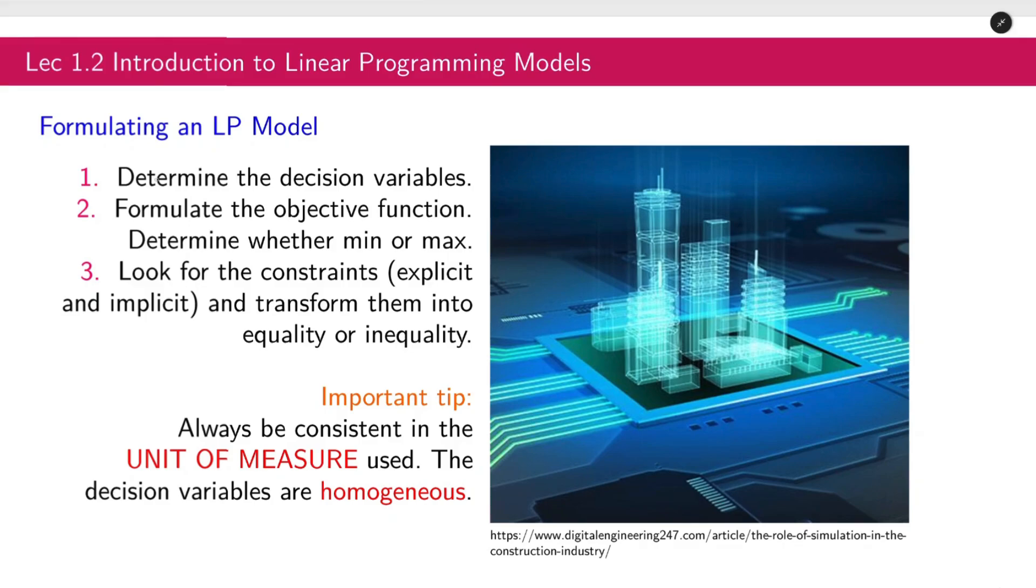Now, let's talk about how to formulate an LP model. First, determine the decision variable. That is one of the most important, the pivotal step. Second, formulate the objective function. Determine whether you're going to minimize or maximize it. Third, look for the constraints, both explicit and implicit, and transform them into equality or inequality. All of these tell you to read the problem carefully. Important tip: always be consistent in the unit of measure used. The decision variables are homogeneous.